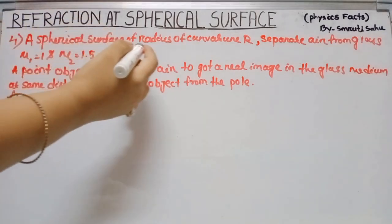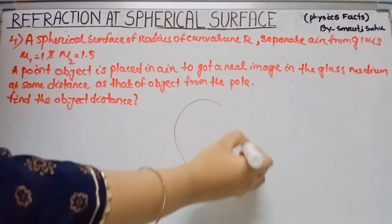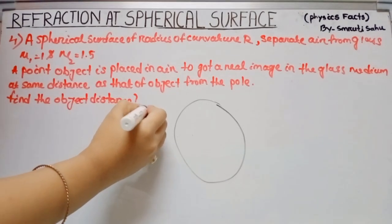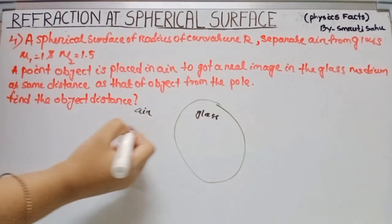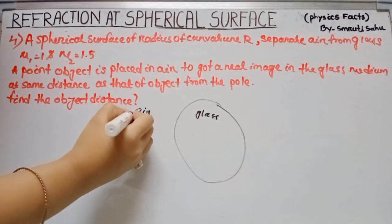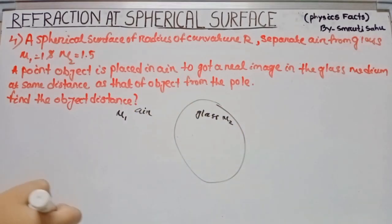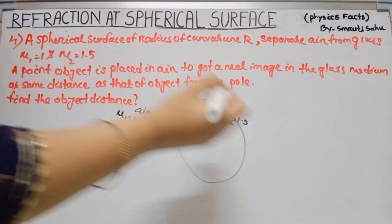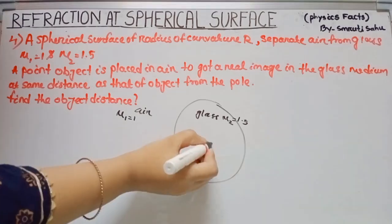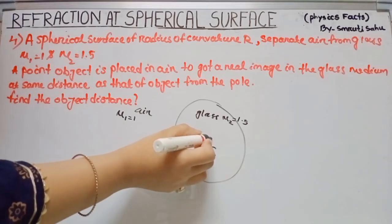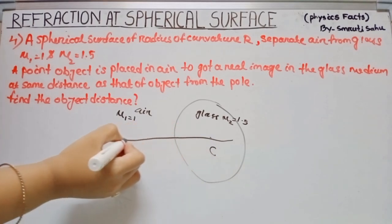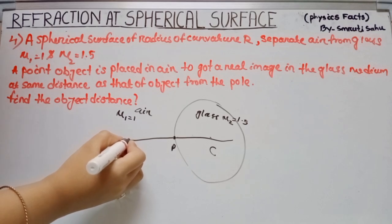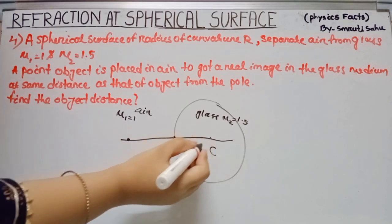Go to another example. A spherical surface of radius of curvature r separates air from glass. The air medium is mu1 equals 1 (rarer medium) and the glass medium is mu2 equals 1.5 (denser medium). Here is the center of curvature and the principal axis, with the pole marked. A point object is placed in air to get a real image in the glass medium.